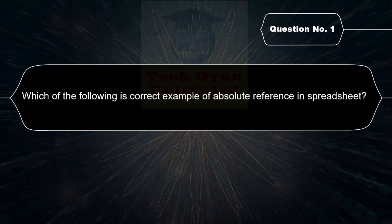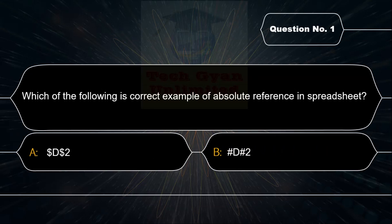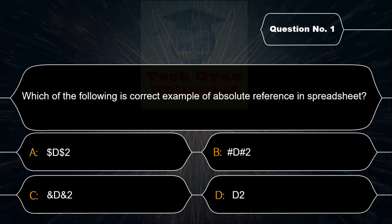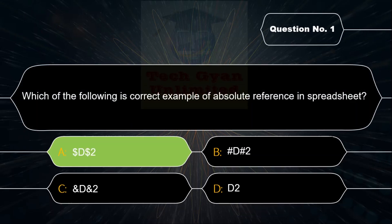Question number one: Which of the following is a correct example of absolute cell reference? Option A: $D$2, Option B: $D$2, Option C: $D$2, Option D: $D2. Correct answer is Option A — $D$2 is the correct example of absolute cell reference.